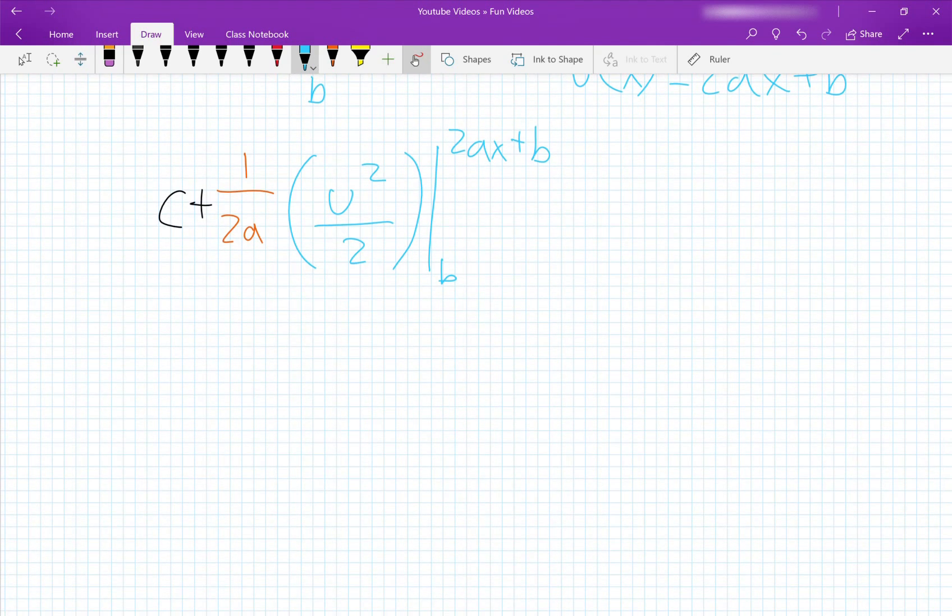So now we just have to substitute 2ax plus b into u and subtract that by substituting b into u squared.